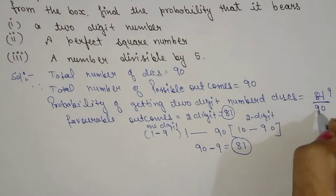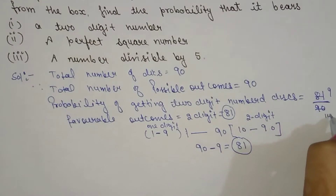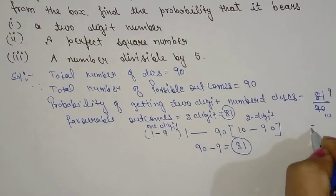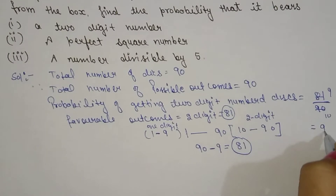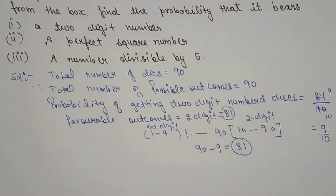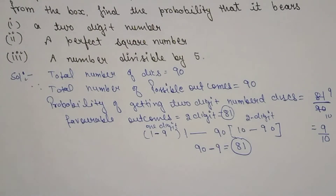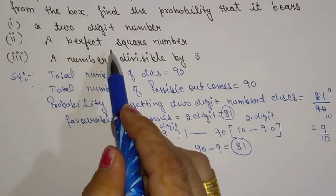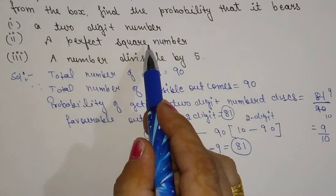So the probability of getting a two-digit number = 81/90, which simplifies to 9/10.